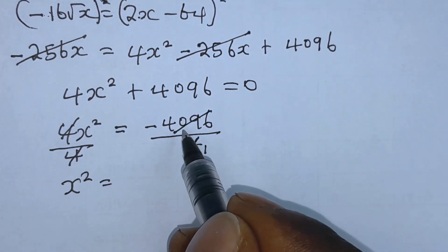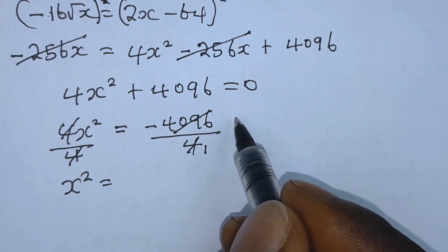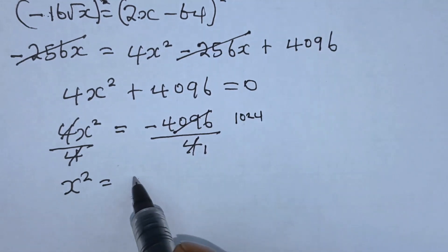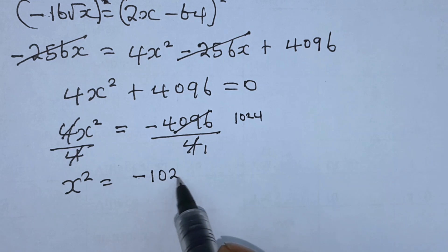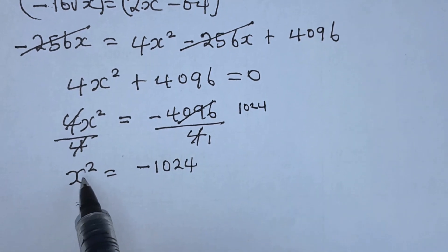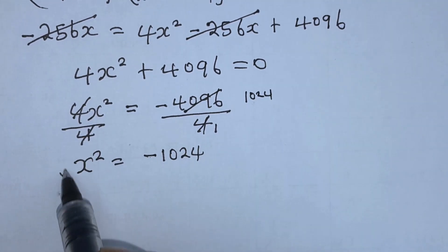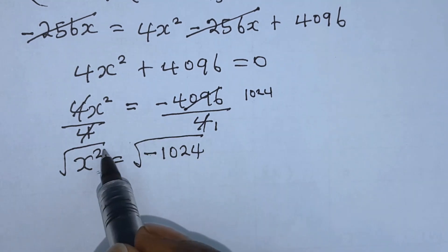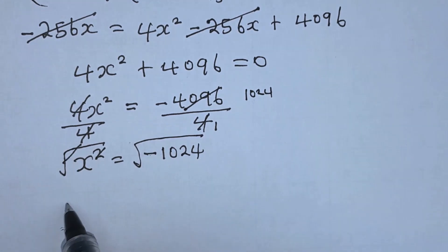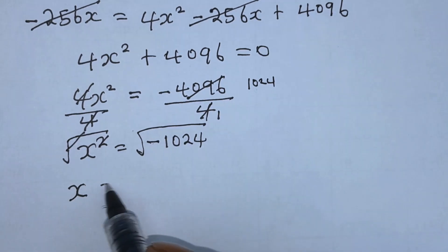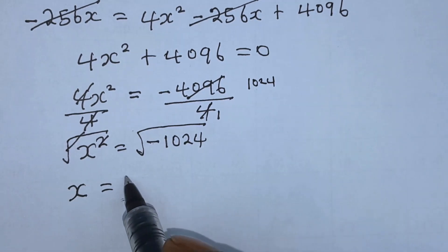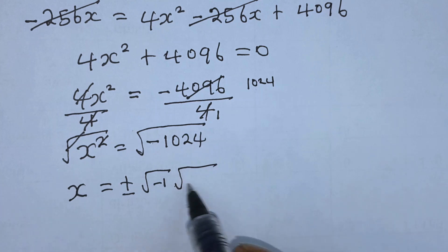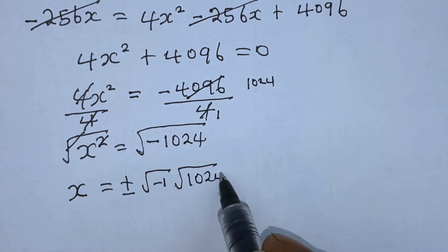We have minus 1024. From here we take the square root of both sides. This square gets cancelled with this square root, and we are left with x is equal to plus or minus square root of minus 1, multiplied by square root of 1024.